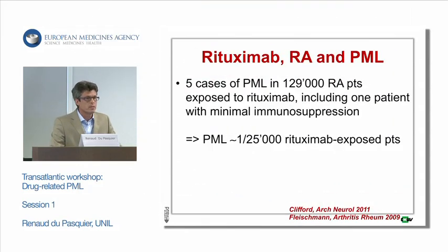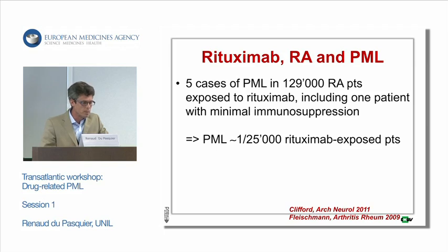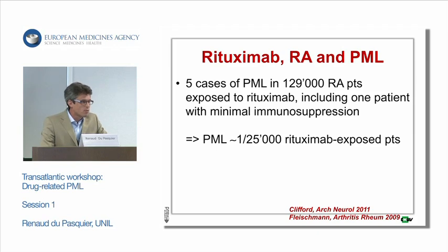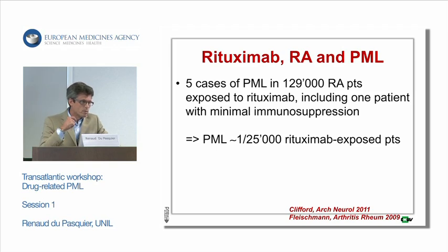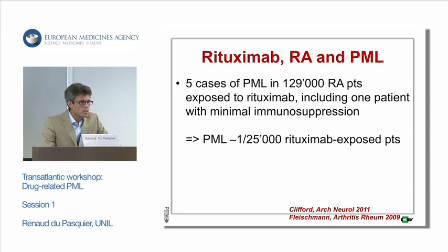So we can conclude that rheumatoid arthritis is a disease not naturally associated with PML. And yet, Clifford recently published a paper describing four cases of PML, adding a fifth case recently reported in the literature — making five cases of PML out of 130,000 rheumatoid arthritis patients exposed to rituximab, including one patient who had really minimal immunosuppression. They estimate the risk of PML associated with rituximab at one out of 25,000.